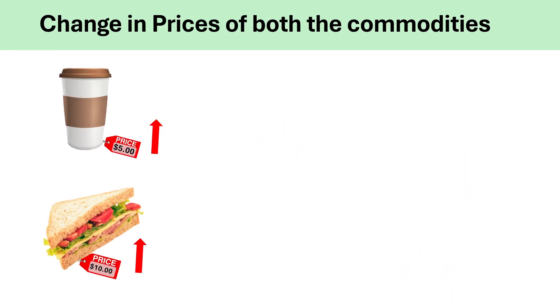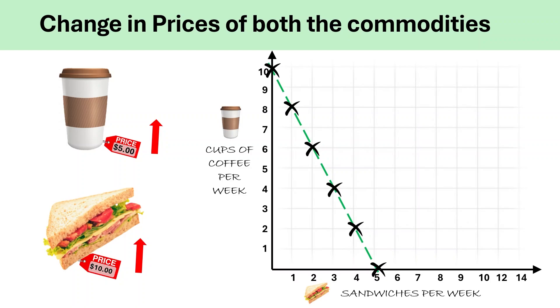Now, let's understand what will happen when the prices of both the goods change. Here, the coffee is costing $5 each and the sandwich is costing $10 each. In this case, will there be rotation or a shift? In this case, the entire budget line shifts. If price of both goods rise, then the consumer's purchasing power decreases and the budget line shifts inward or to the left and vice versa. In summary, a change in the prices of both the goods will result in a shift in the budget line rightward for falling prices and leftward for rising prices.